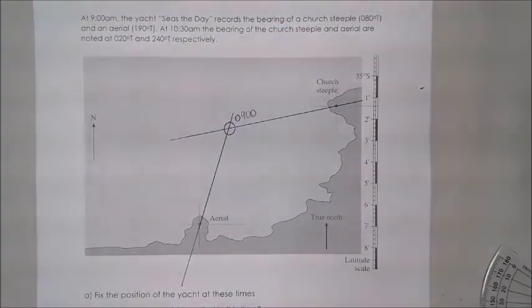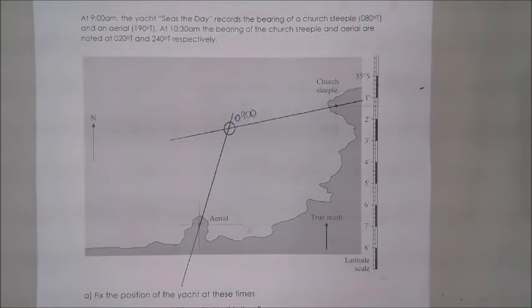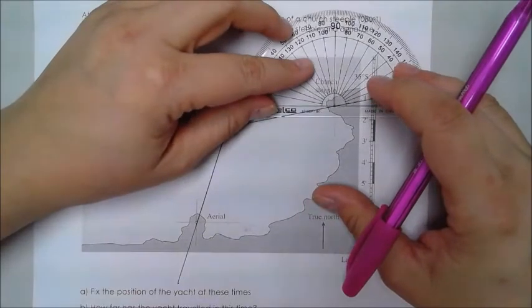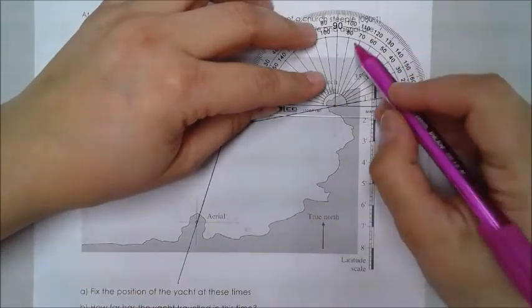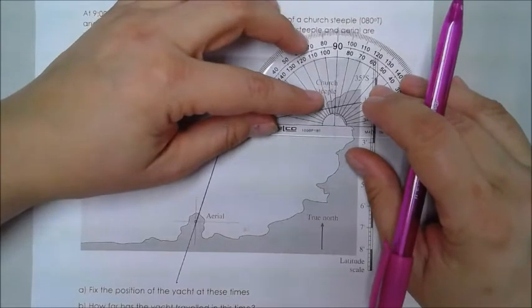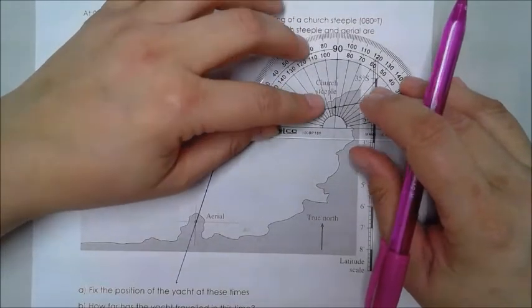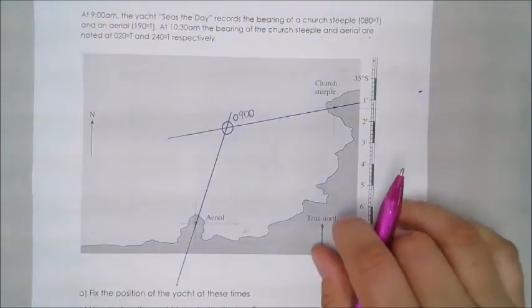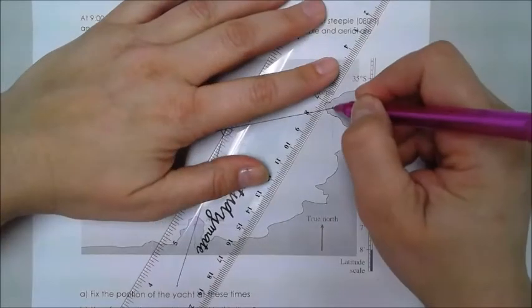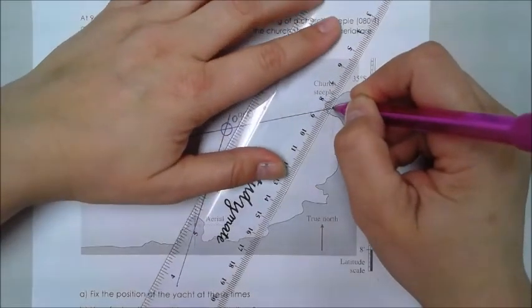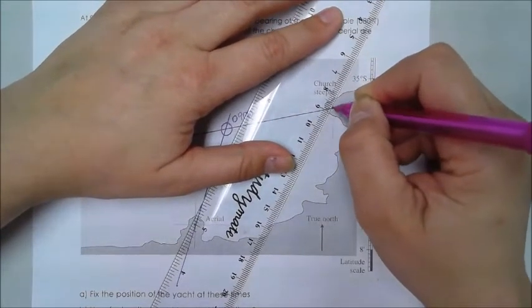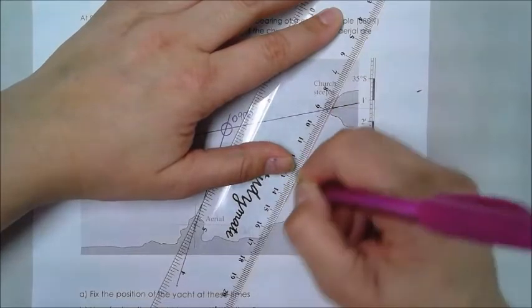So now my next times. At 10:30, the church steeple is at 20 degrees. Exact same process. Put my protractor on, 10, 20. I'm going to move it down a little bit so I'm not marking in my text. Get my ruler, make the dots, and extend it out.